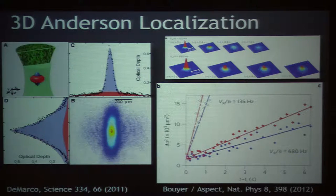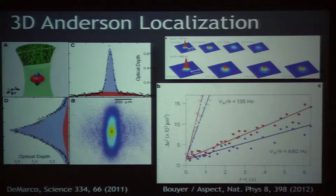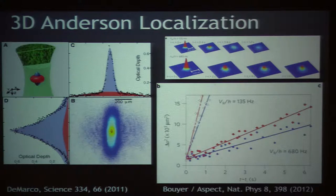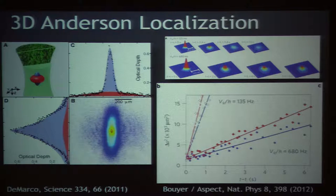This is an example where there is very strong disorder. Now at six seconds, there's still a remnant of localized atoms. Here they're showing for two different disorder strengths — weaker and stronger disorder — the size of the gas squared versus time, and this is the size of the component which diffuses away slowly. There's a localized component present, and if you squint you can see there's a haze — you see the same thing — and that's the diffusion of that part.